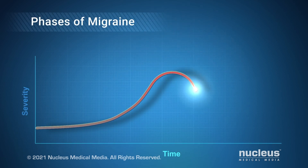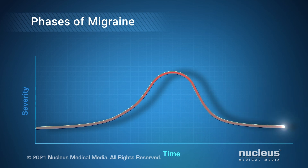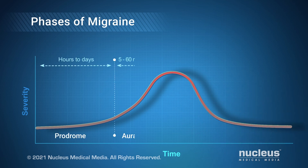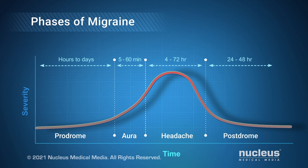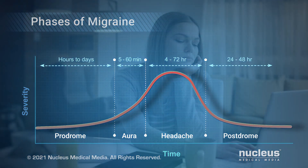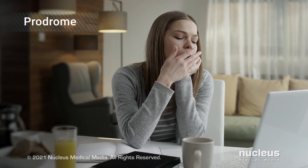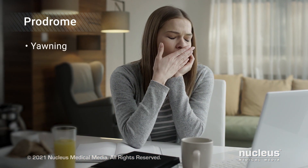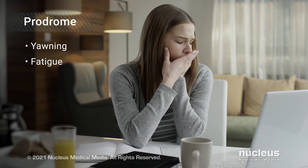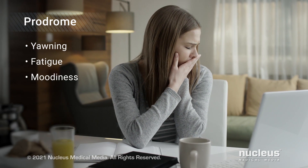The typical phases of a migraine attack are prodrome, starting hours before a headache, aura, headache, and postdrome. Prodrome includes subtle symptoms such as yawning, fatigue, or moodiness.